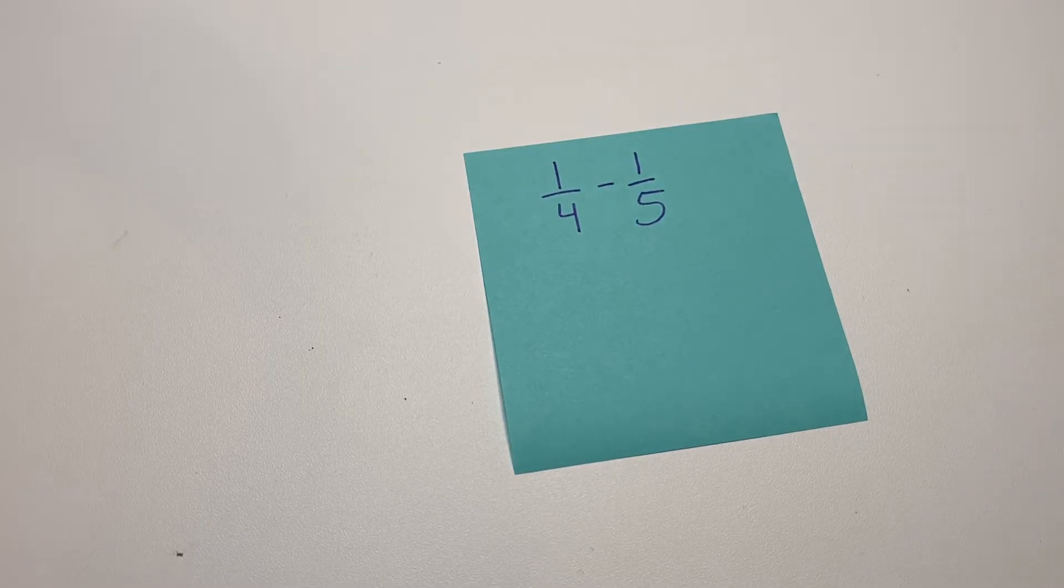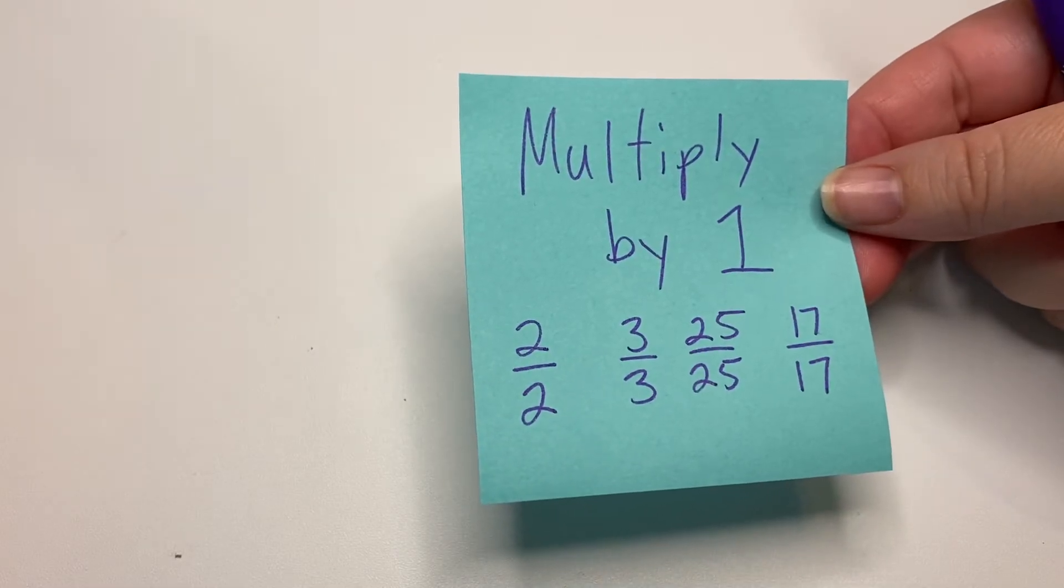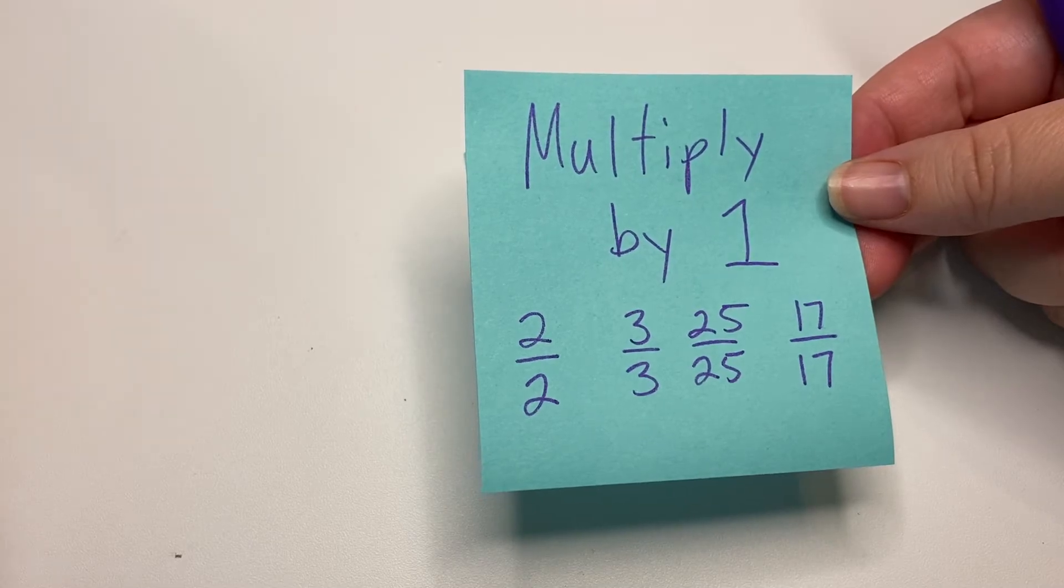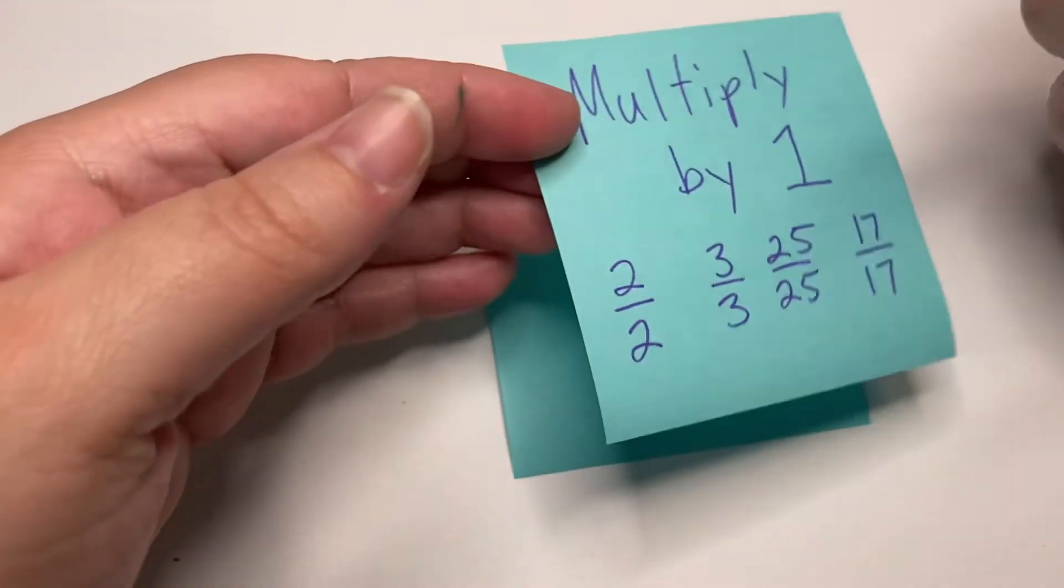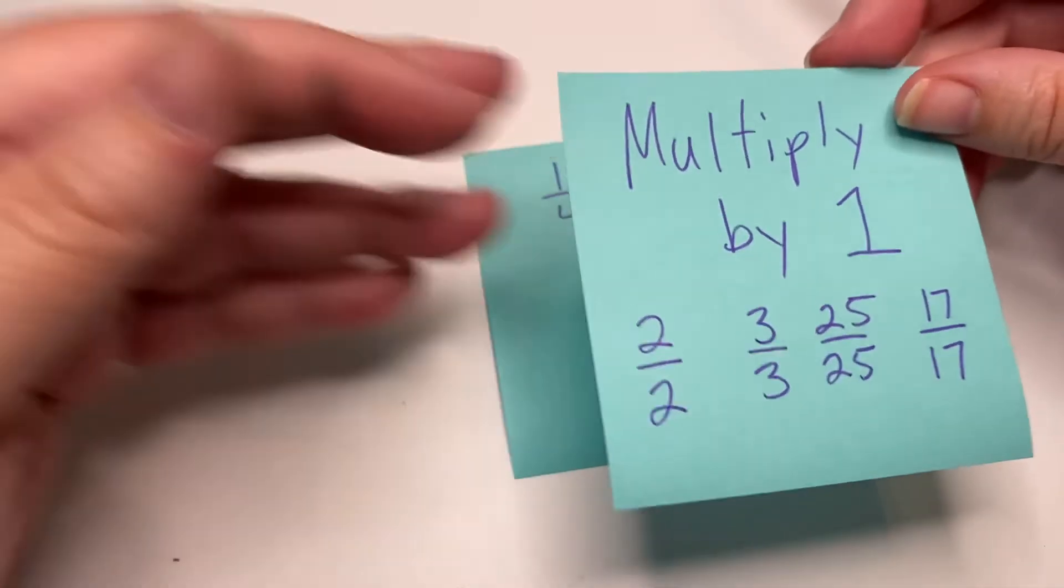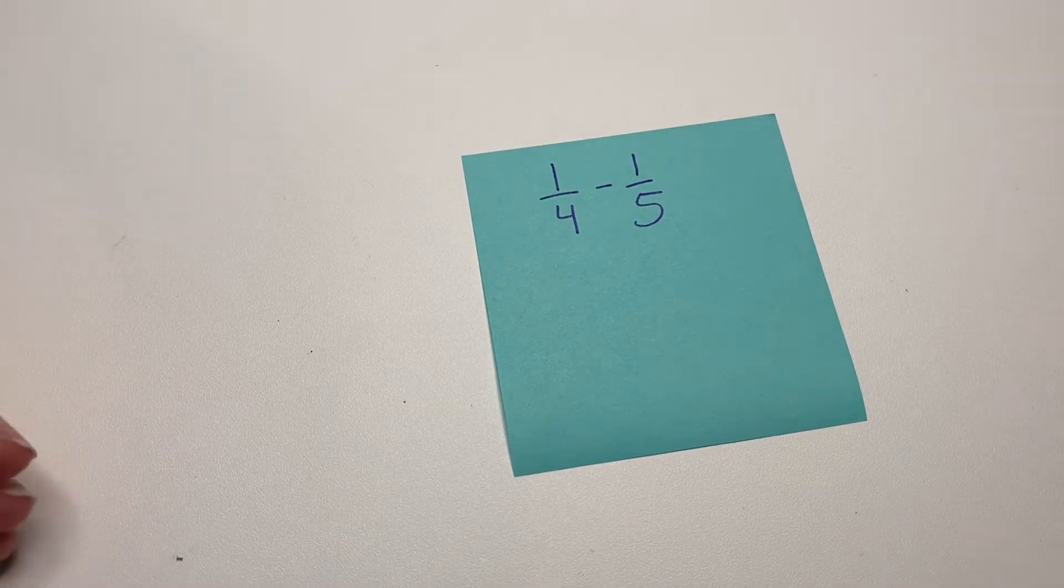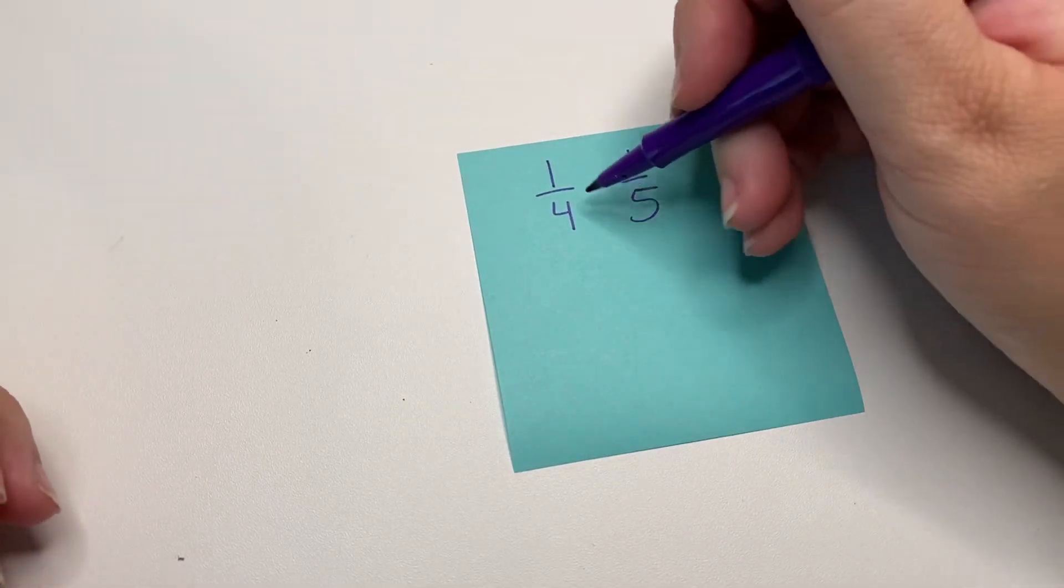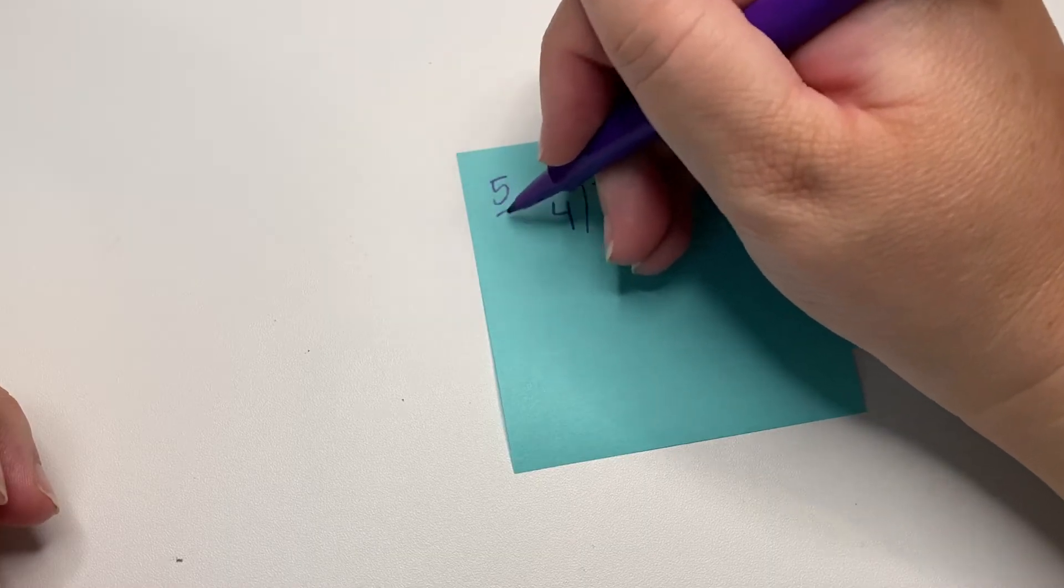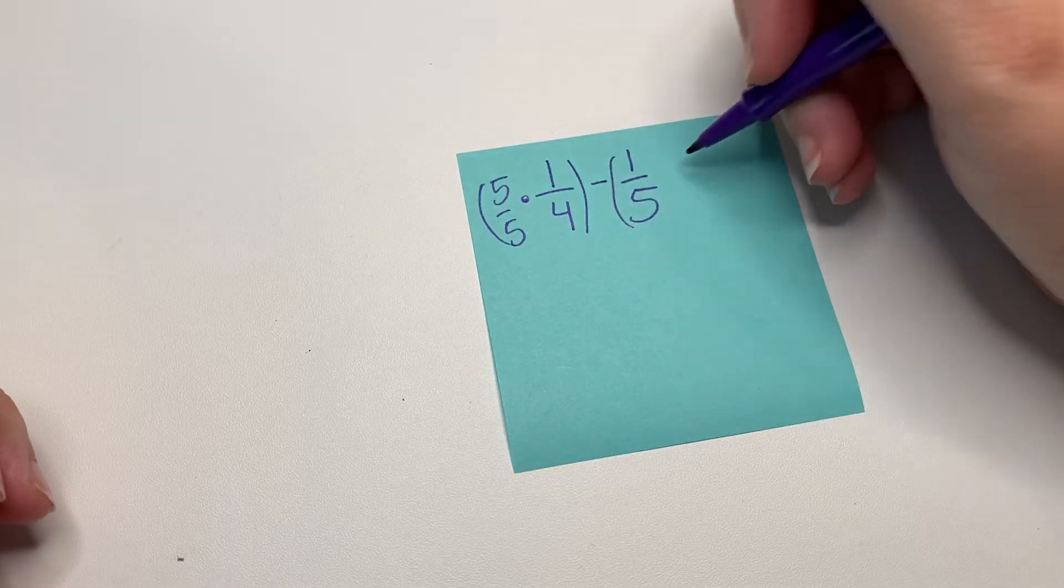So what we're going to do is we're going to multiply by one using one of anything divided by itself equals one, right? And since fractions are division problems, that means that these are all equal to one. And when we do this, we don't change the value of the fraction, we just change the way that it looks. So if we multiply the one fourth times this version of one, we're going to get 20.